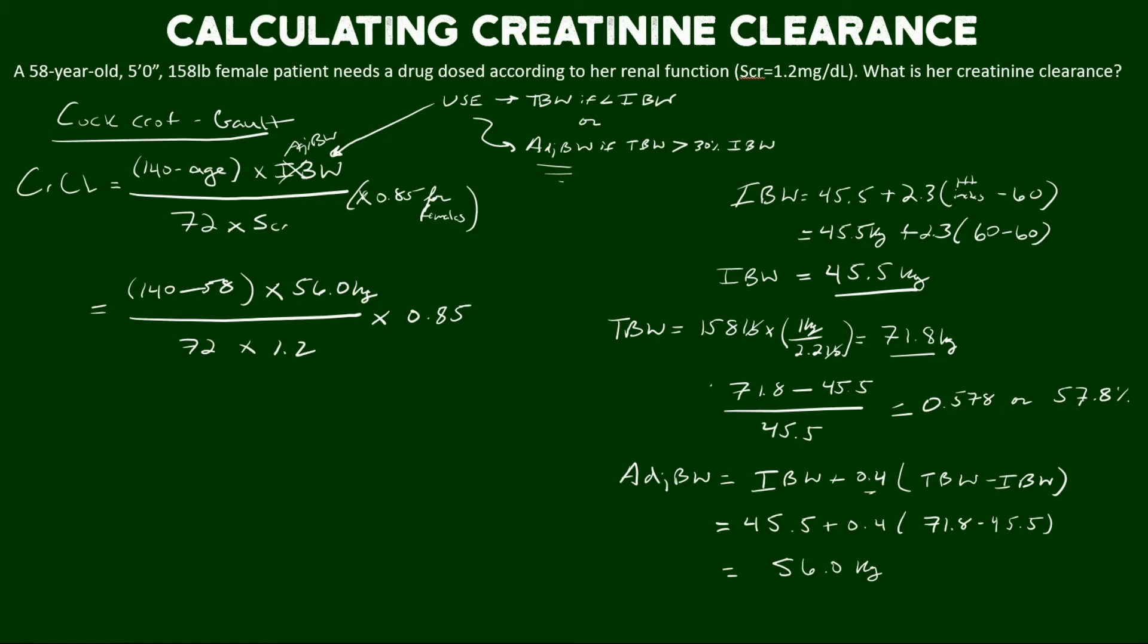Making special note that we have put in the patient's age of 58. We've used adjusted body weight. We've used the serum creatinine which is given in the case scenario. And we multiplied it by 0.85 because this is a female. And that gives us a creatinine clearance of 45.2 mL per minute.